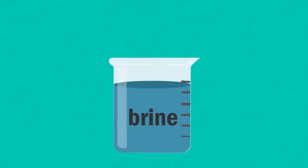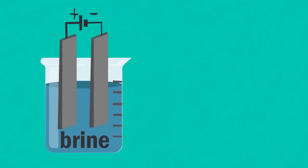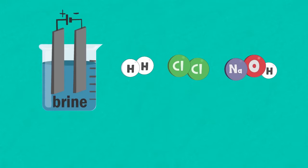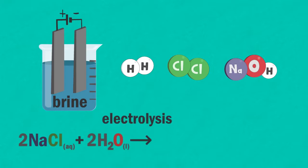Overall, the electrolysis of brine has produced hydrogen, chlorine, and sodium hydroxide, and so we can write a summary equation. Concentrated sodium chloride solution plus water, when electrolyzed, gives sodium hydroxide solution, hydrogen gas, and chlorine gas.